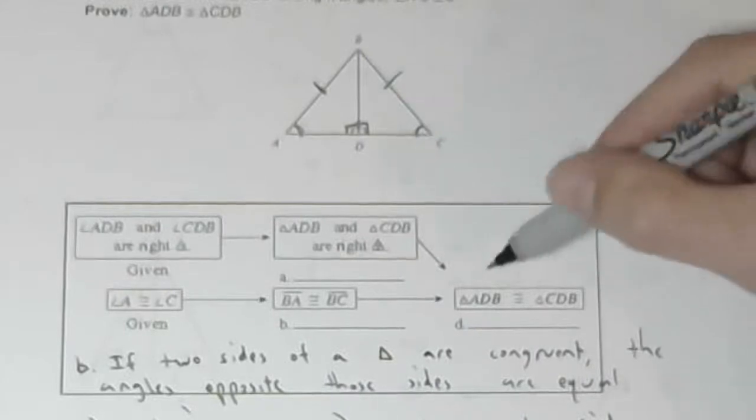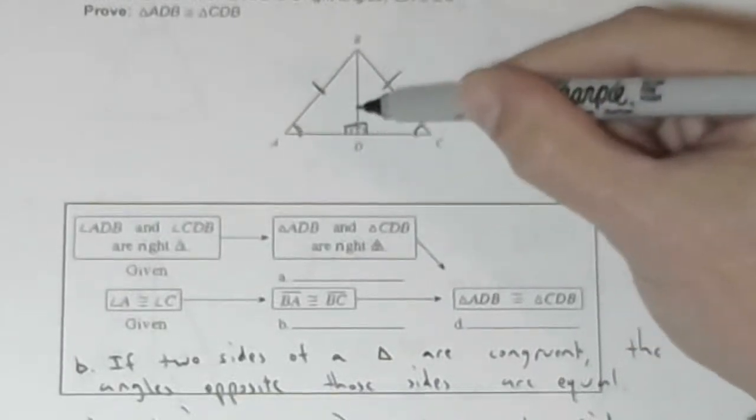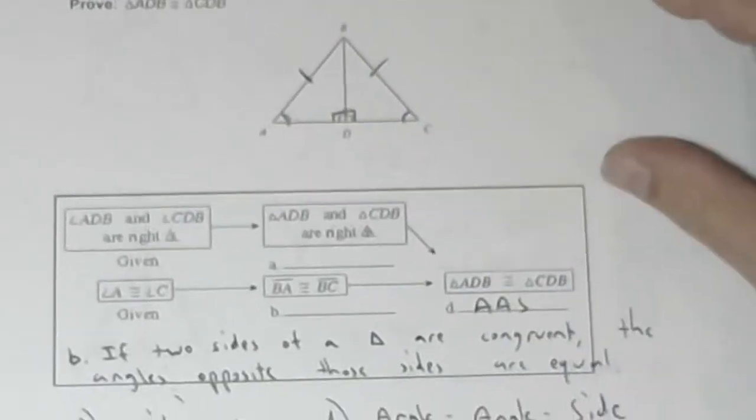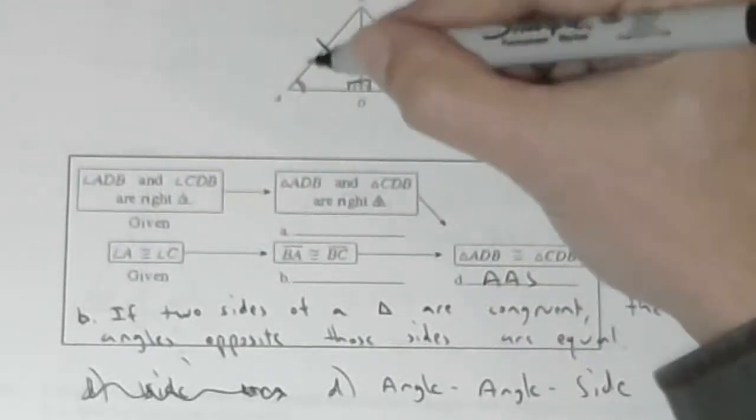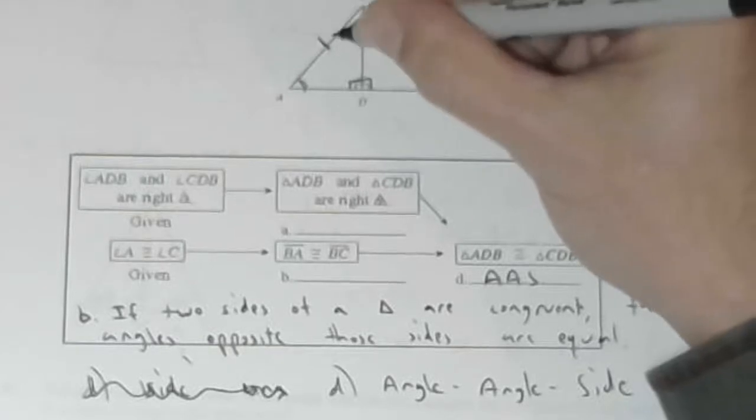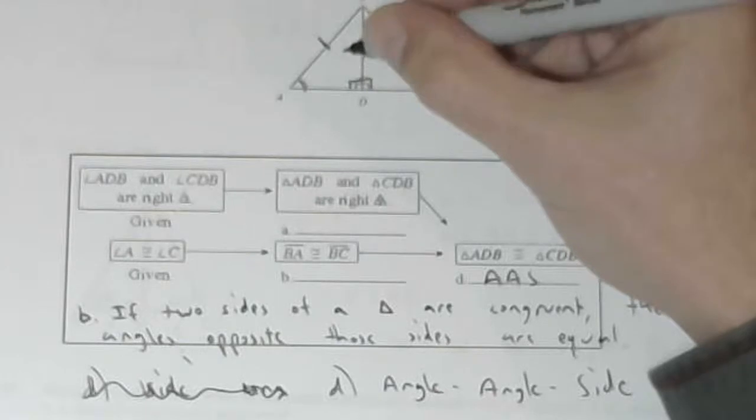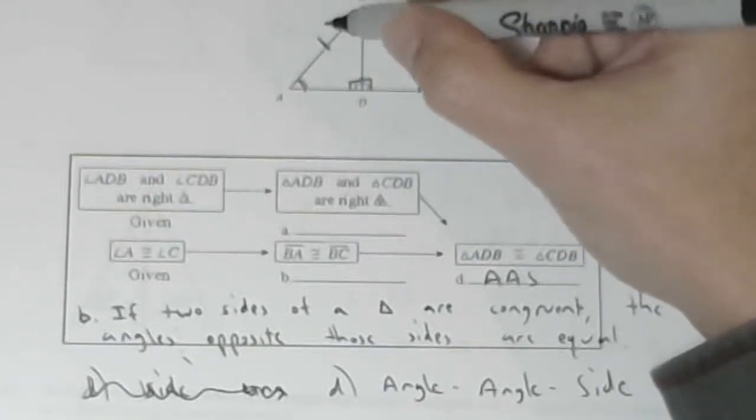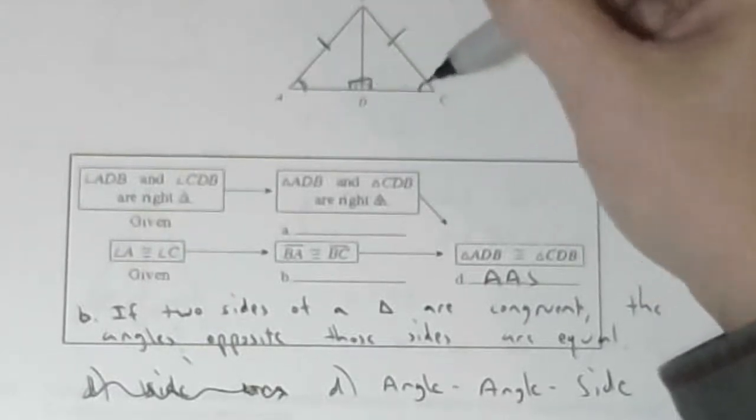For the congruence, the reason is angle angle side, which is AAS. We write AAS to show that the sides that are congruent, that we prove congruent, are not included between the angles. Angle angle side, because any two angles and a side will prove congruence.